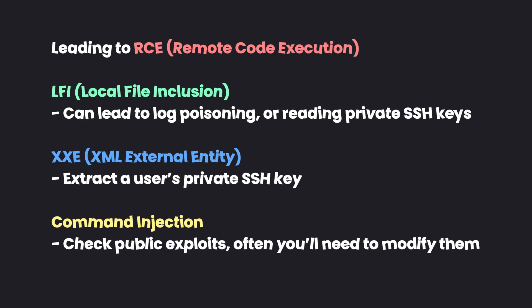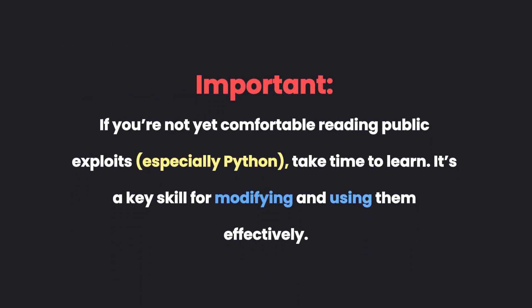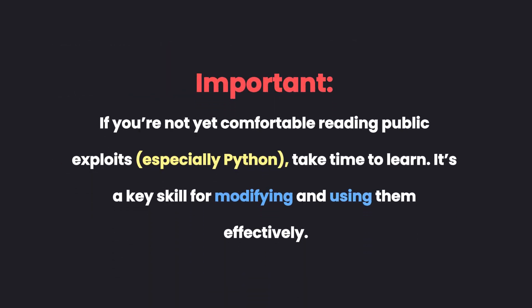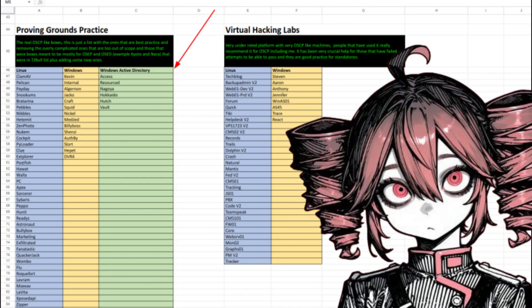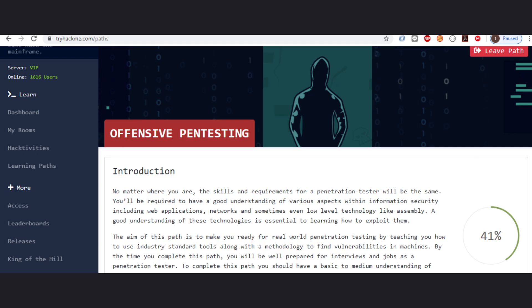Definitely make sure you learn how to do log poisoning, learn how to do command injection, and learn how to find and modify public exploits to be able to get a shell that way. If you're not comfortable reading public exploits or not comfortable with Python — just being able to read and modify basics — I highly recommend you get comfortable with that. Find rooms either through HackTheBox, TryHackMe, or look for rooms that specifically involve public exploits.